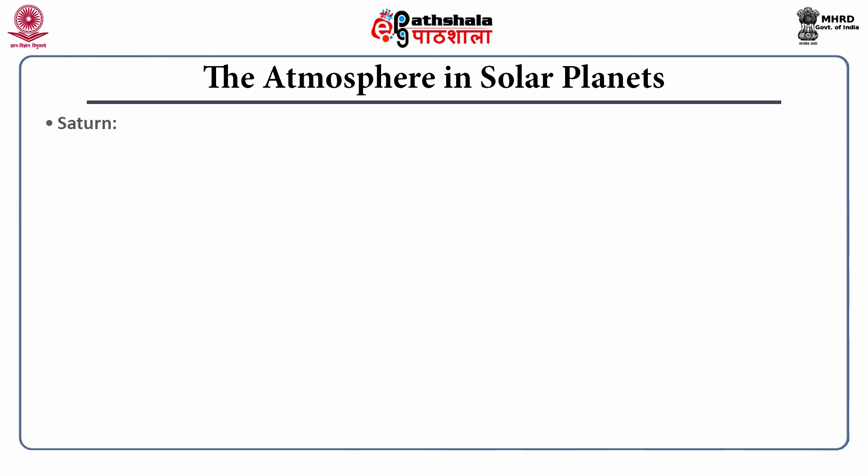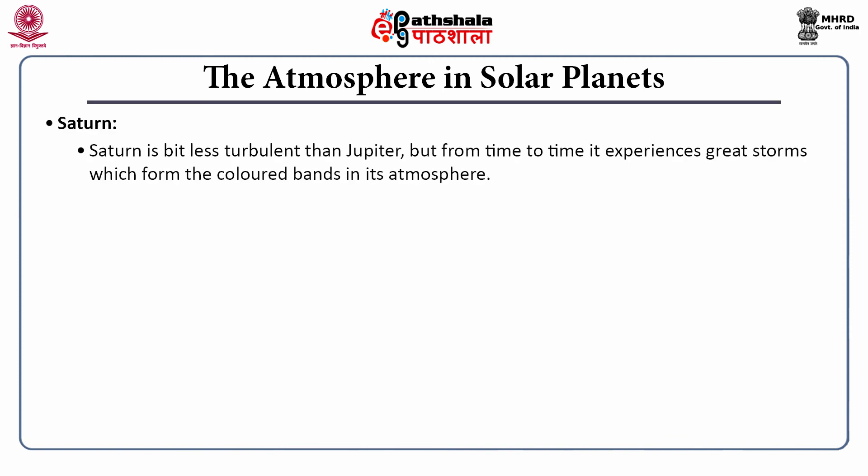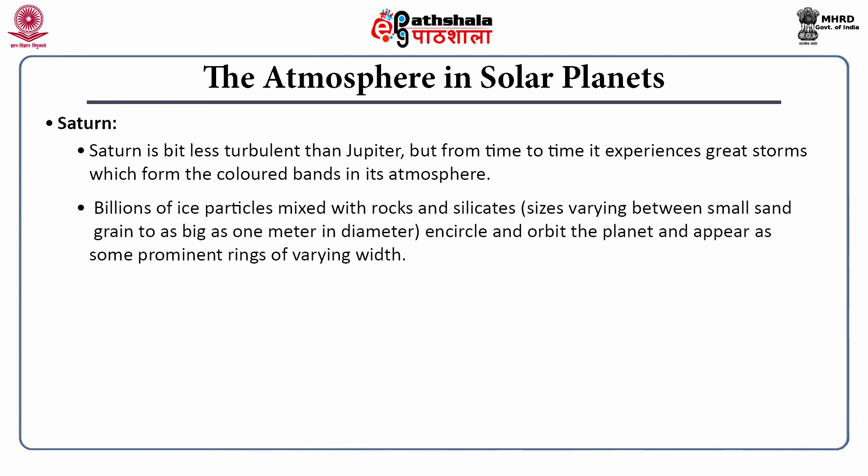Next comes Saturn. Saturn is a bit less turbulent than Jupiter, but from time to time it experiences great storms which form color bands in the atmosphere. Billions of ice particles mixed with rocks and silicates — ranging in size from a sand grain to about 1 meter in diameter — encircle and orbit the planet, appearing as prominent rings of various widths.